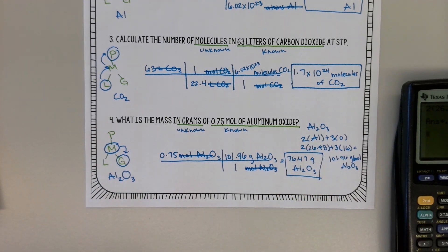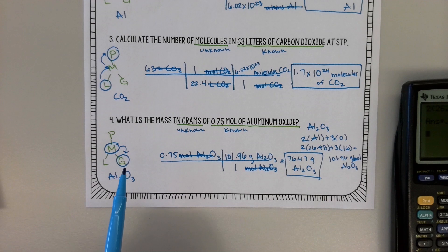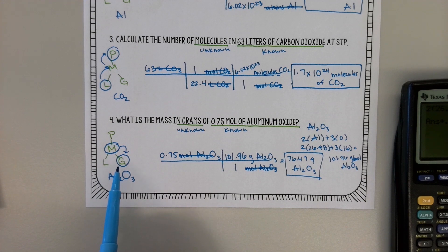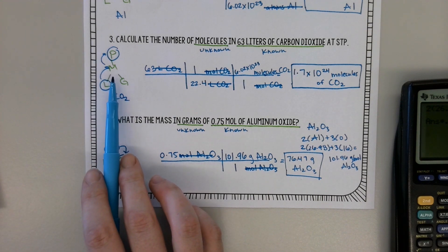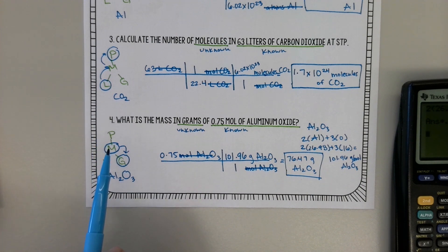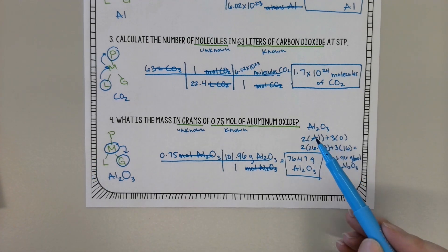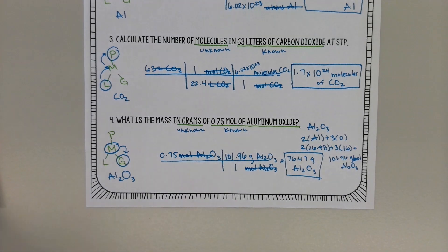You can use this method for any of the mole problems we've done — mole and particles, mole and mass, and mole and volume. It really comes in handy for two-step problems like numbers one and three from this practice. The only type of problem you can't use it on is finding molar mass, which is simply adding up the masses of all individual atoms. If you have any questions or concerns, remember to email or message me.